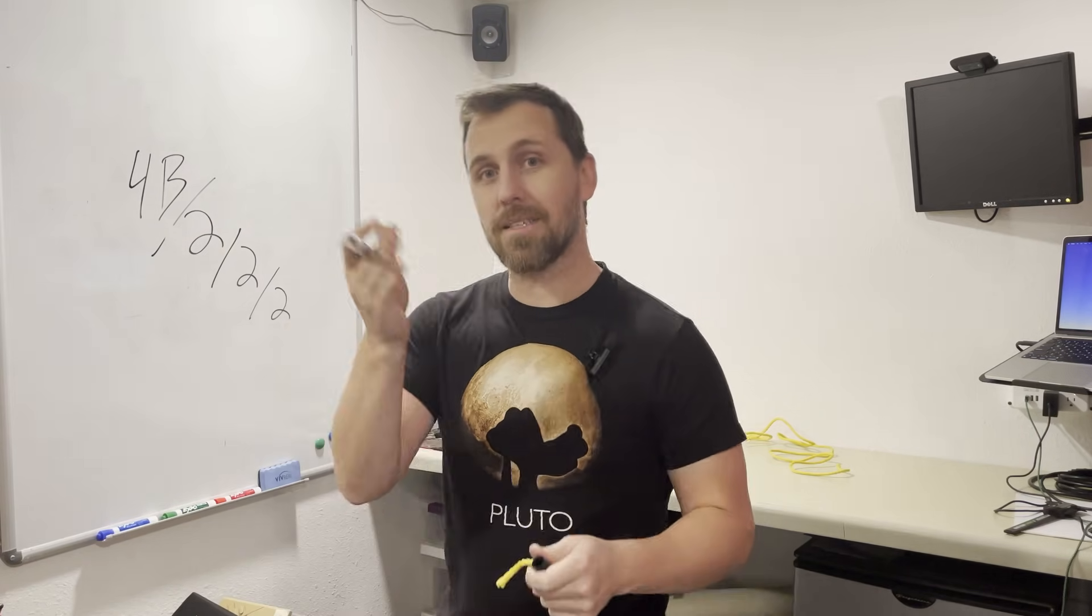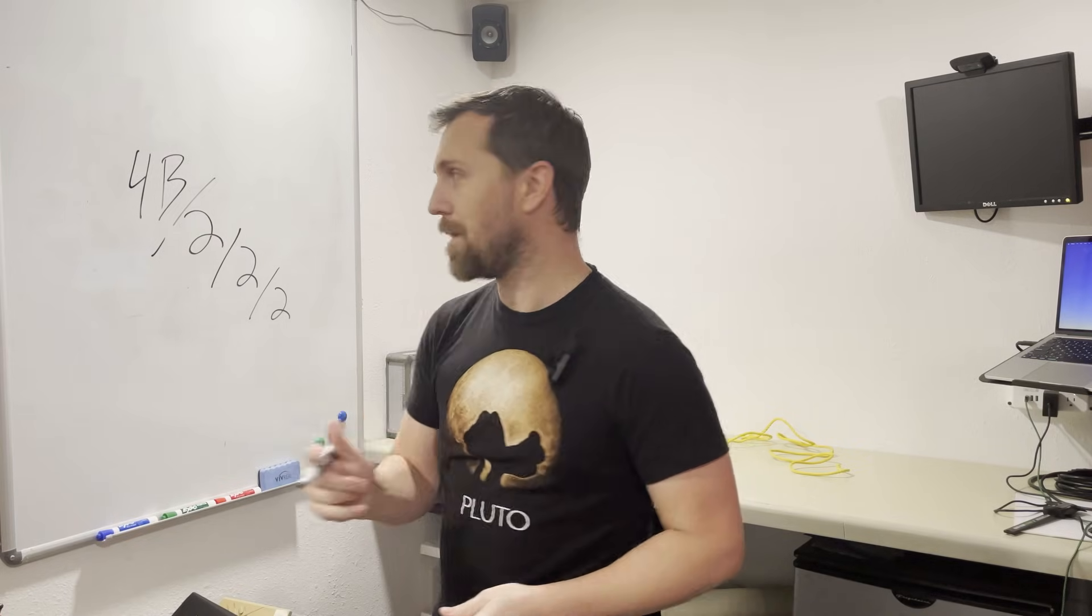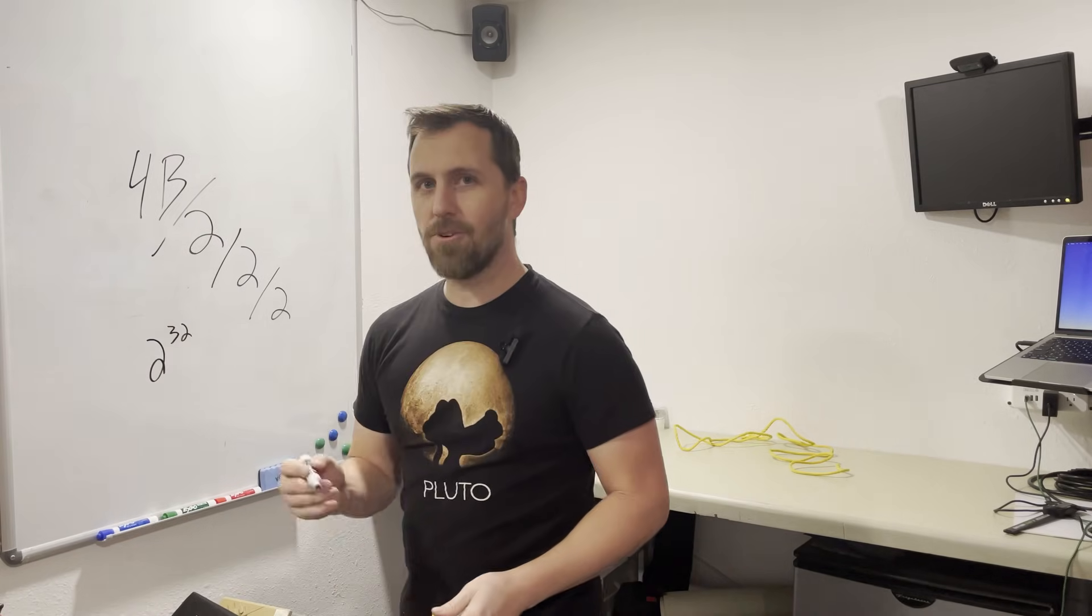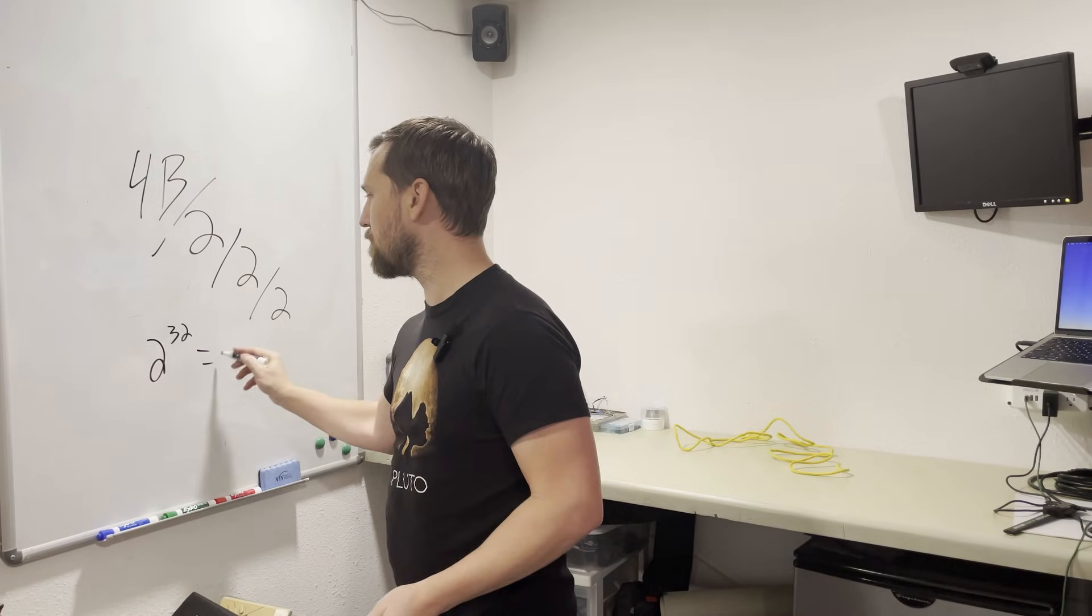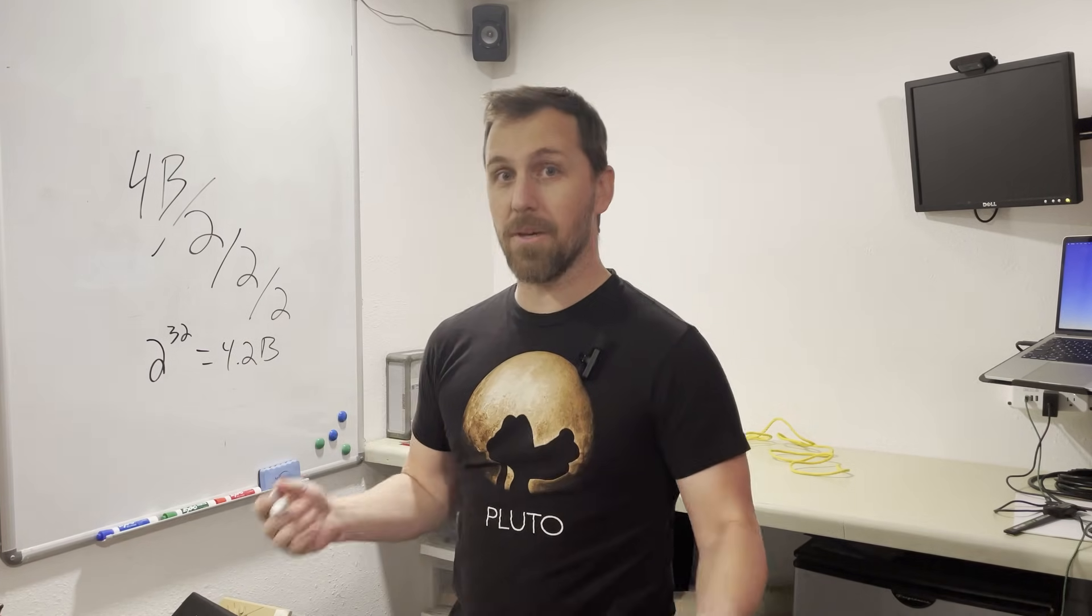If you want to see why a slash 32 is one IP address, because 2 to the 32 is all of our IP addresses. That equals 4.2 billion addresses.